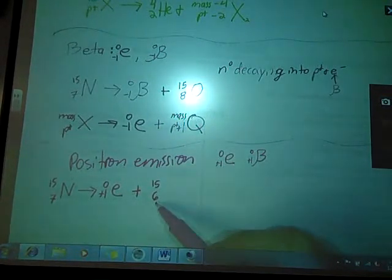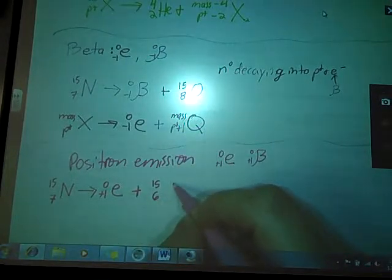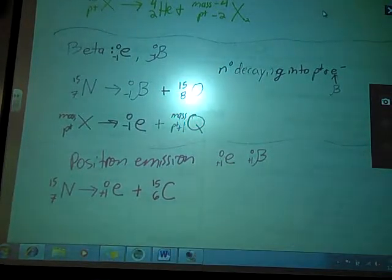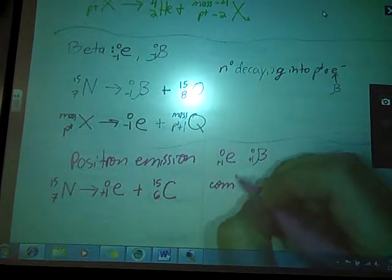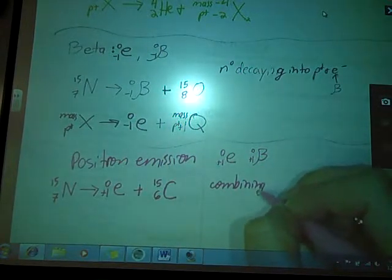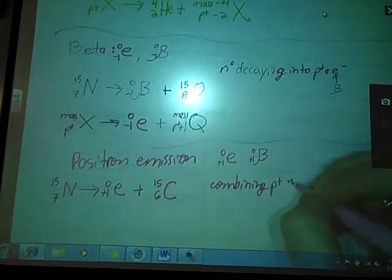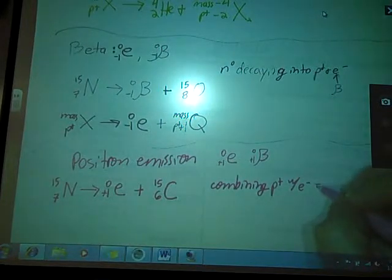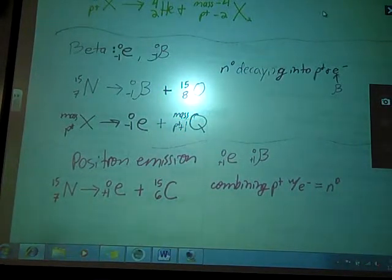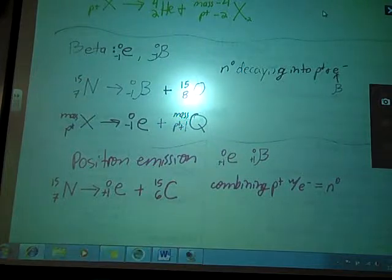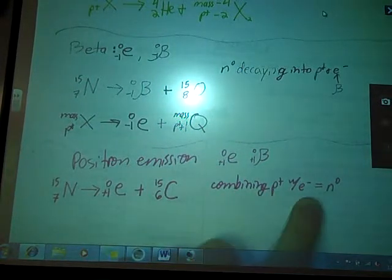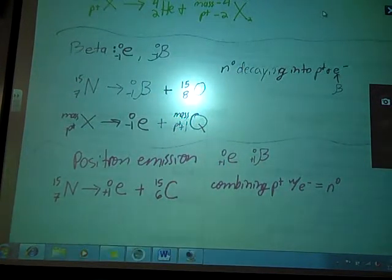I have to go to my periodic table. Atomic number 6 is in fact carbon. So we are combining a proton with an electron to make a neutron in positron emission. This occurrence causes a positron to be emitted.